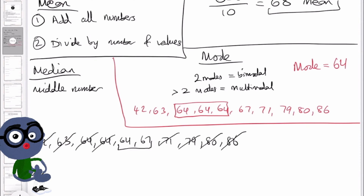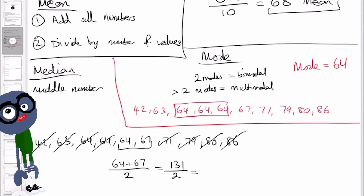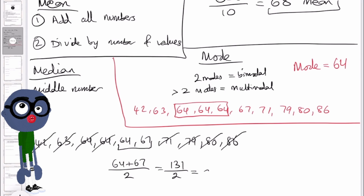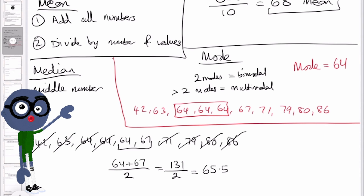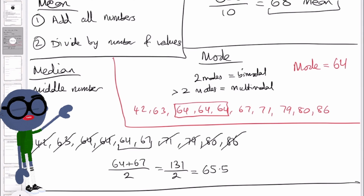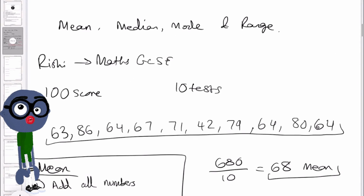To get the median of these two remaining numbers, we add them together and divide by 2. That's 131 divided by 2, which gives us 65.5. So our median is 65.5.